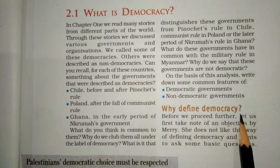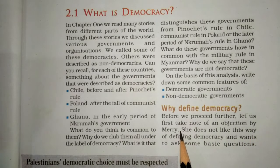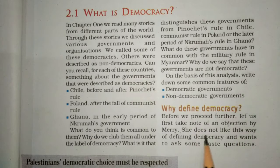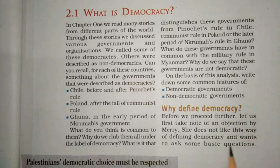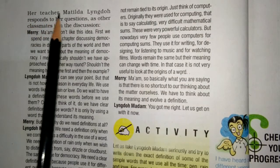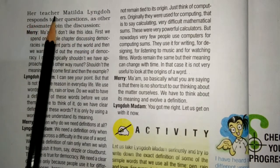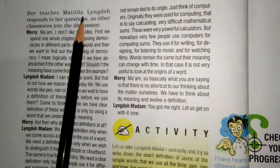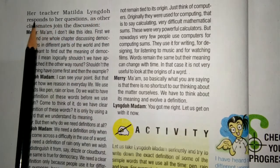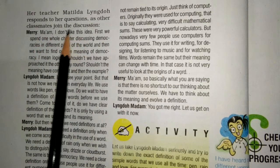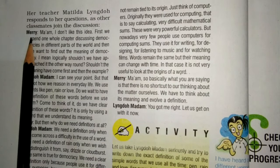Before we proceed further, let us first take note of an objection by Mary. यहां एक लड़की का नाम है Mary — she does not like this way of defining democracy and wants to ask some basic questions. उसकी teacher का नाम है Matilda Langdo, और जब उसने Mary की question का answer देना शुरू किया तो बाकी के classmates ने भी इस discussion को join किया।